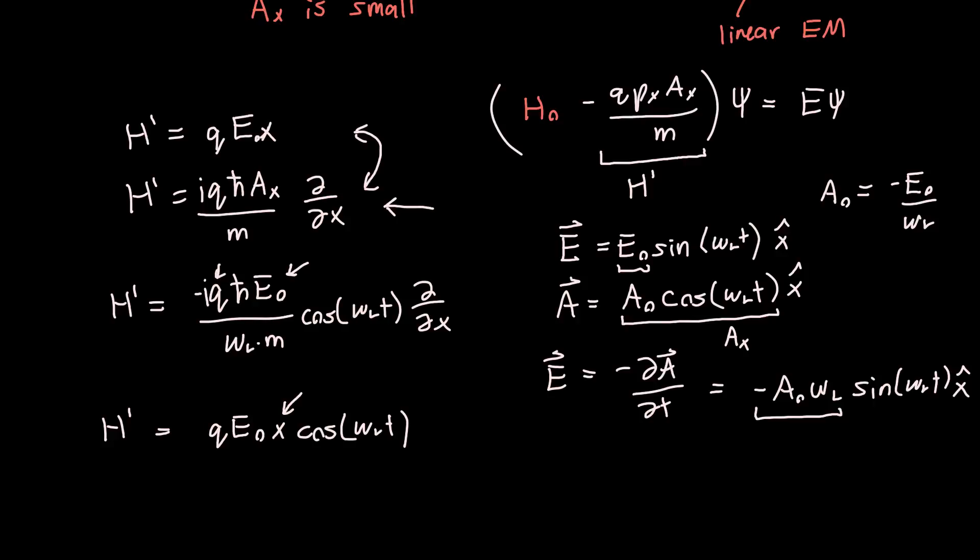Now instead we've got a bunch of other stuff - we've got an extra iℏ or -iℏ over ωₗ times m, and we've got a derivative with respect to x instead of x essentially. And you might say, Jordan, that's not simpler at all - we've got an extra like four physical constants to deal with. But because we have a derivative instead of an absolute value of coordinates, it'll make our lives a lot easier.